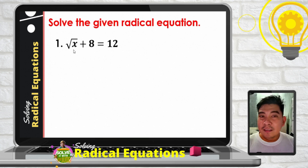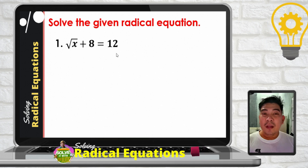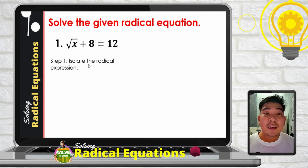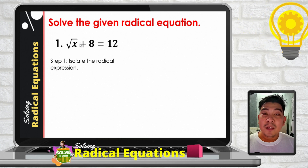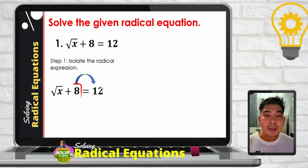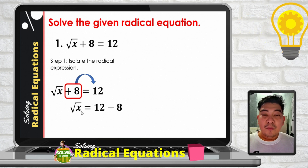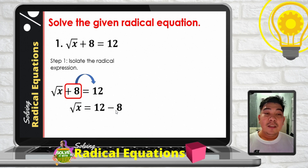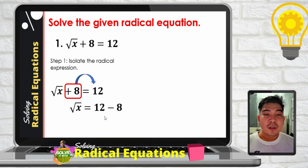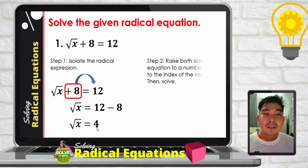Solve: the square root of x plus 8 is equal to 12. The first step is to isolate the radical expression. We separate the square root of x from the constant term 8 by transposing positive 8 to the other side, giving us: square root of x is equal to 12 minus 8, which equals 4.